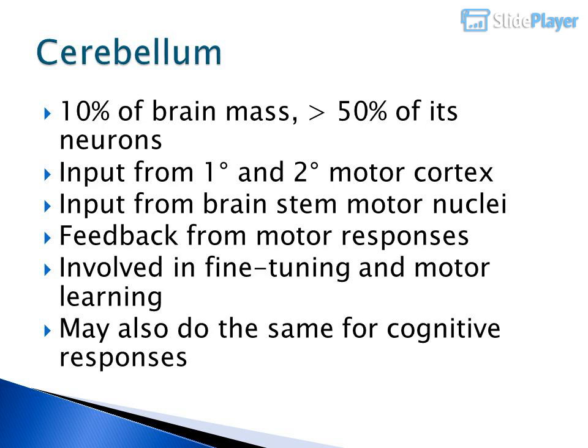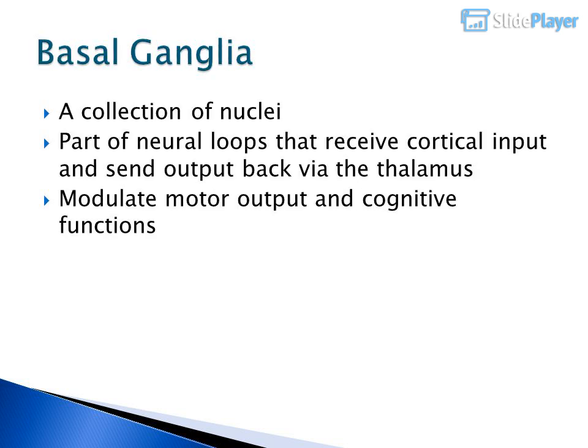The Cerebellum contains 10% of brain mass but greater than 50% of its neurons. It receives input from primary and secondary motor cortex, from brainstem motor nuclei, and feedback from motor responses. It is involved in fine tuning and motor learning, and may do the same for cognitive responses. The Basal Ganglia are a collection of nuclei that are part of neural loops receiving cortical input and sending output back via the thalamus, modulating motor output and cognitive functions.